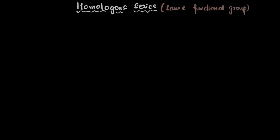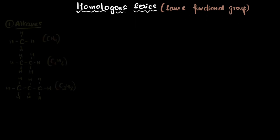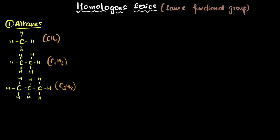Let's explore homologous series and their features. Homologous series are basically a group of molecules which have the same functional group. For example, if you look at all the alkanes, all these molecules have one thing in common — they have a single bond. So we say that they have the same functional group, single bond, and therefore all alkanes belong to a single homologous series.